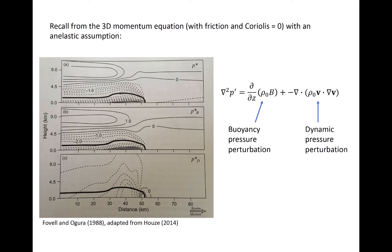We can also, from the 3D momentum equation with anelastic assumptions, divide the pressure perturbation into its hydrostatic contribution, the buoyancy pressure perturbation, and the dynamic pressure perturbation. The total pressure perturbation is the sum of the two and is seen in the plot at the top. It is dominated by the buoyant pressure perturbation in the rear of the gust front. However, right at and just in front of the gust front, the dynamic pressure perturbation dominates, as discussed on the previous slide.